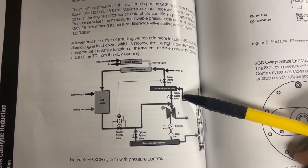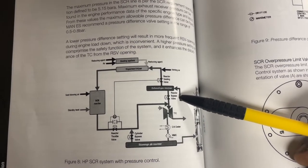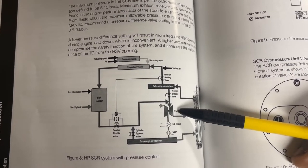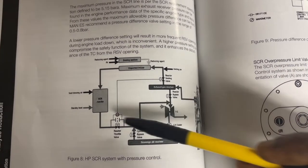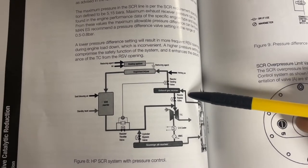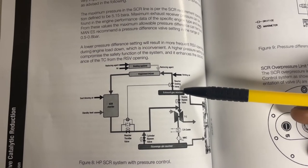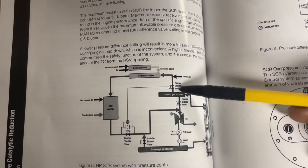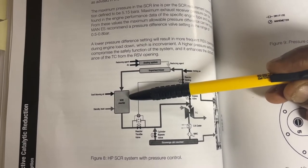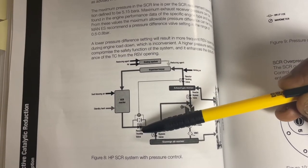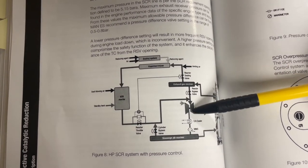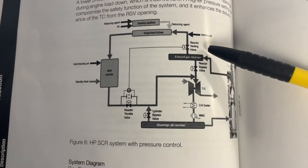The RBV starts to close. Now the turbocharger is getting the exhaust gas through the SCR reactor. The exhaust gas goes to the exhaust gas receiver, from there it goes to the vaporizer, by mixture from there it comes to the SCR reactor, through the reactor throttle valve it comes to the turbocharger and goes out.